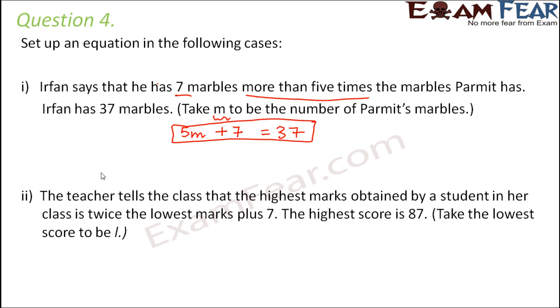Let's look at the next one. The teacher tells the class that the highest marks obtained by a student in her class is twice the lowest marks plus 7. The highest score is 87. We already know the highest score. So what do we not know? The lowest score. Let us assume the lowest score to be l. So our step 1 is done.